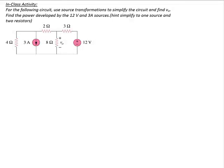Let's try an example. For the following circuit, use source transformations to simplify the circuit and find V0. Find the power developed by the 12-volt and 3-amp sources. Recall that if we're looking for V0, and V0 is the voltage across the 8-ohm resistor, I cannot include the 8-ohm resistor in a source transformation. Once I do that, I lose my definition for V0. We can work around the 8-ohm resistor, but we can't include it.